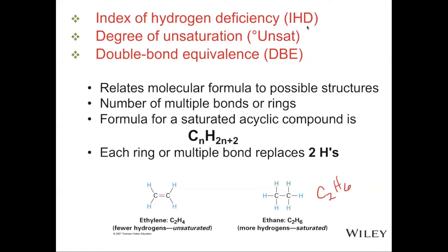If we look over on the left however, we see ethylene which is C2H4 and it does have a double bond. So it wants to be C2H6 to be saturated, but it is C2H4. Because we are missing two hydrogens, that means we have one degree of unsaturation, or one double bond equivalence, or one index of hydrogen deficiency. Each time we have a double bond or a ring, two hydrogens are lost, so this compound would be one degree of unsaturation.